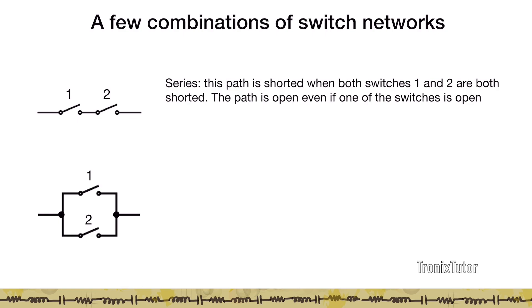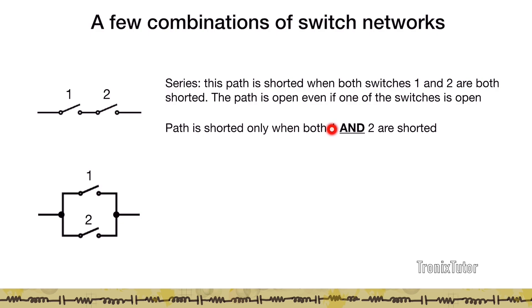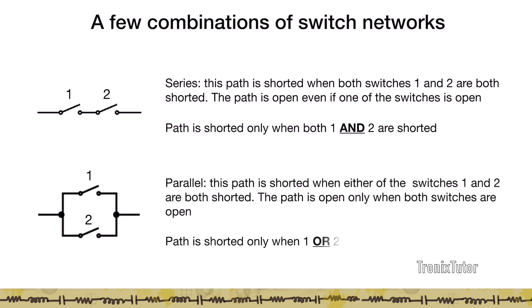Let's look at a couple of common switch configurations. In a series switch network, the path is shorted only when both switch one and switch two are shorted; if either is open the path is open. In a parallel switch network, the path is shorted when either switch one or switch two is shorted — you don't need both to be shorted. Even if only one of them is shorted, the path gets shorted. These configurations become useful when constructing NMOS and PMOS networks.